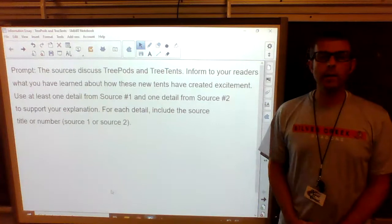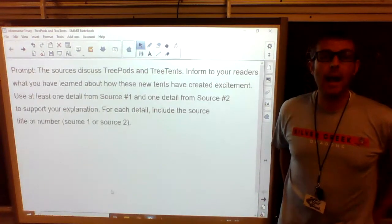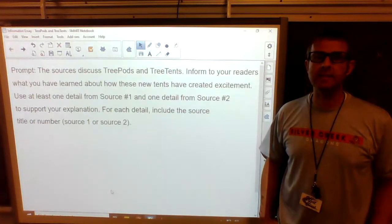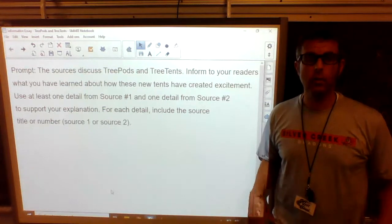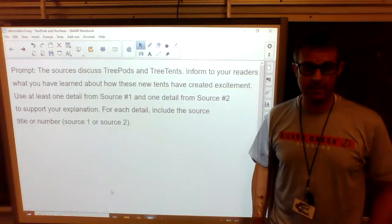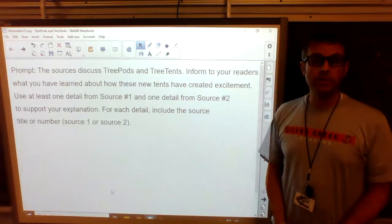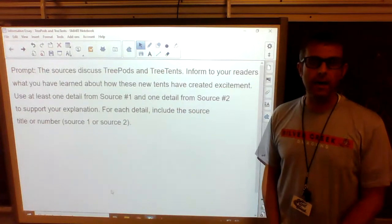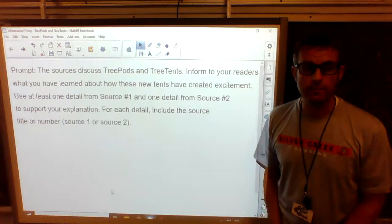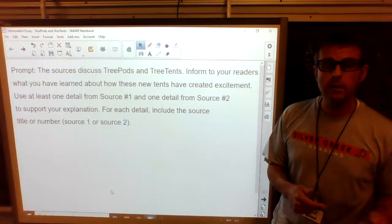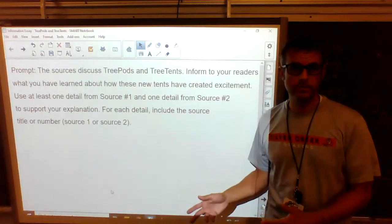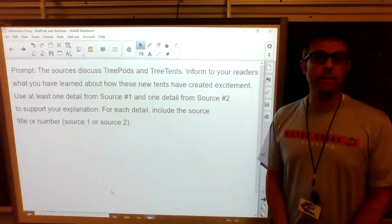So what we are doing is we're writing an essay to inform our readers, the people that's reading our essay, how the tree pods and the tree tents have created excitement. And then it tells us that we must use at least one detail from each source. And we have to tell the reader which source it came from by either saying from the tree pod article or the tree tent article, or we could say from source one or source two. So now we're ready to actually begin our writing.